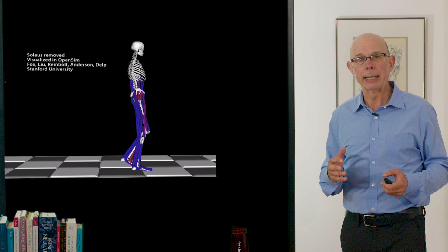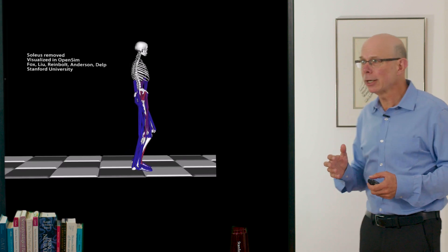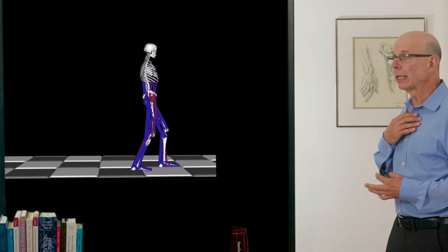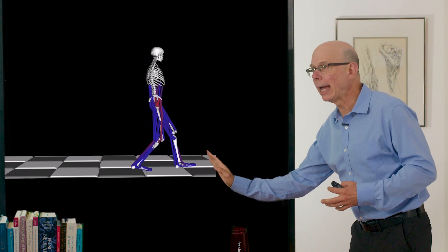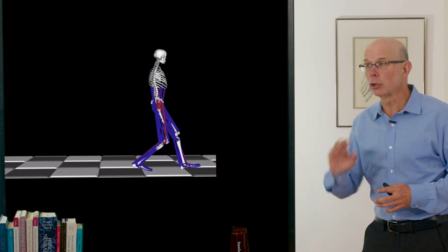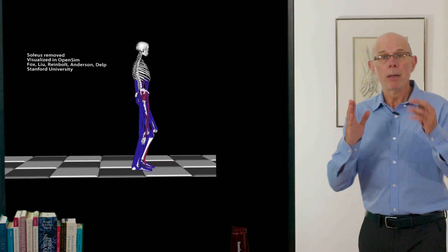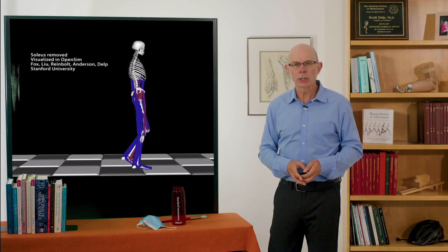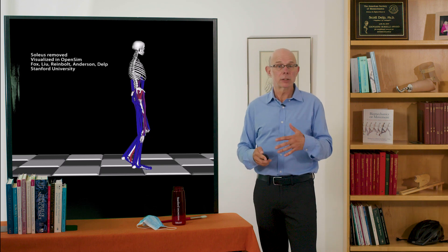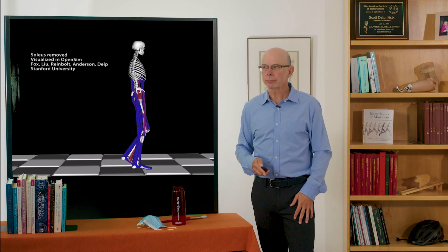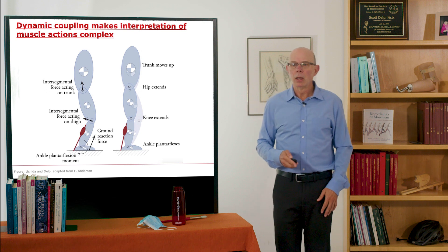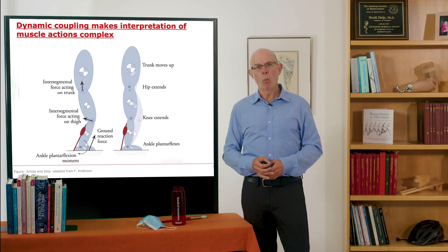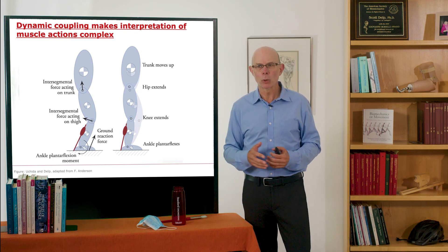Let's take another example. Here we're looking at the soleus muscle. It crosses only the ankle. In this simulation, I just turned the soleus off, so the ankle flexes more than it should be. You also see that the knee is flexing as well. So even though the muscle crosses only the ankle, it affects the knee and the hip as well. How does that occur? Why is the muscle action so complex?